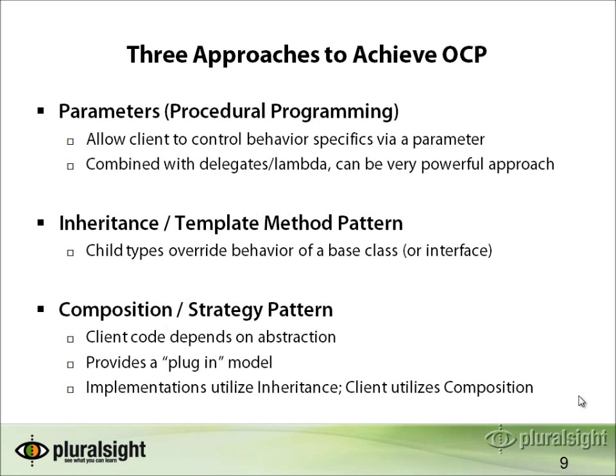There are typically three approaches to achieving the Open-Closed Principle. The first is more applicable to procedural programming languages: using parameters. By exposing parameters in your application, class, or function, you allow the client to control behavior via those parameters. This typically involves sending some state — like a string with information — to a function or class. You can also combine this approach with delegates and lambda expressions to powerfully change exactly how the class or function behaves.